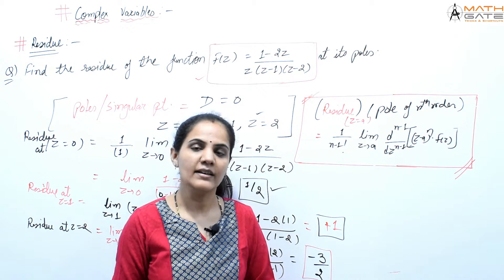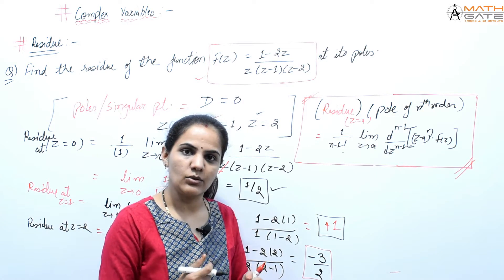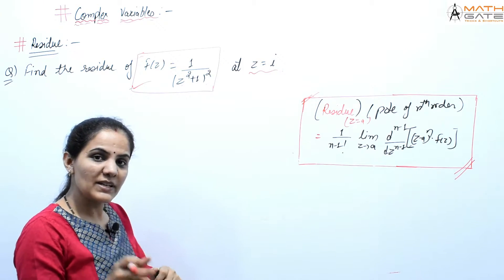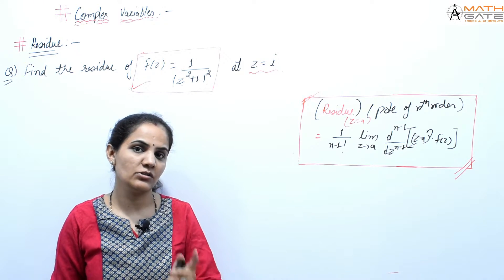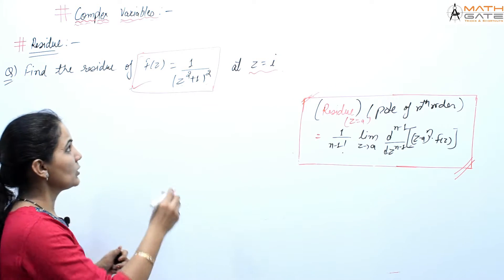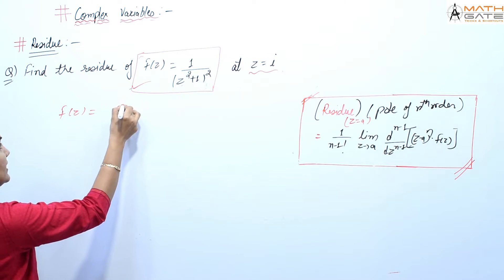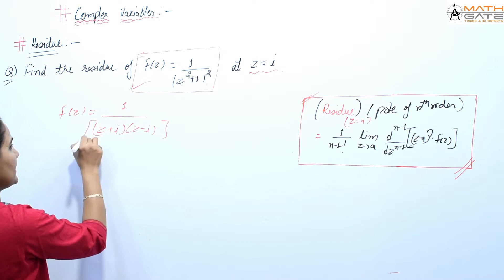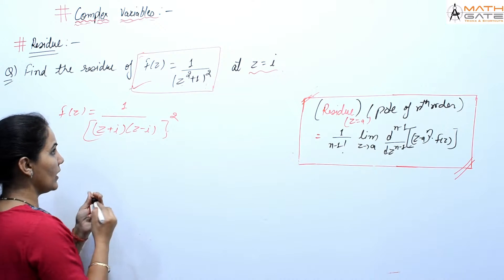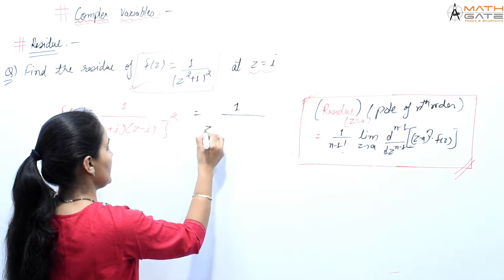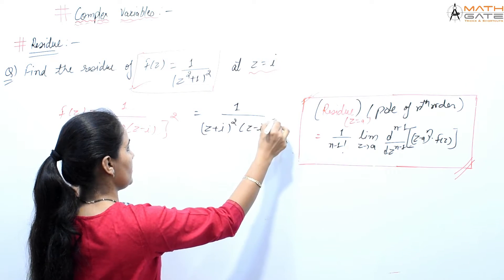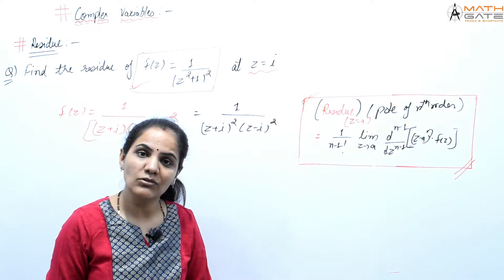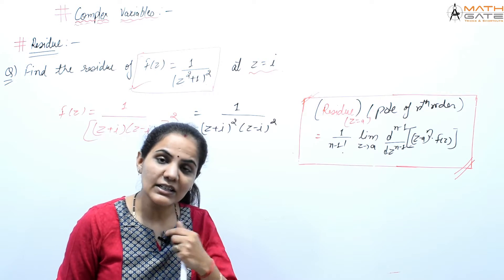Example 2: Find the residue of f(z) = 1/(z²+1)² at z = i. The point z = i is specified. First simplify the function: z²+1 = (z+i)(z−i), so f(z) = 1/[(z+i)²(z−i)²]. The pole at z = i is of second order.